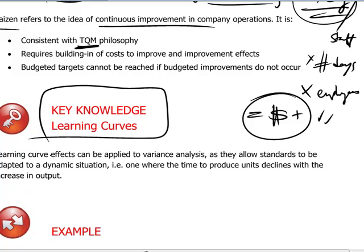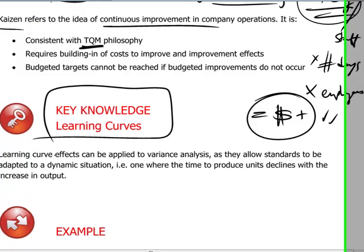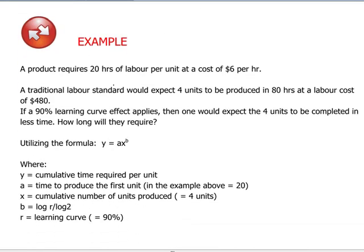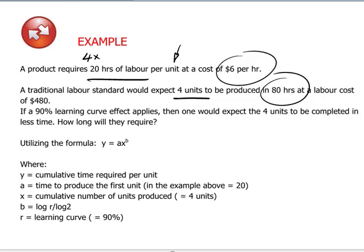There's another technique connected with the beneficial impact of people doing their jobs more efficiently — learning on the job. To quantify this effect, consider an example: a product requires 20 hours of labor per unit at a cost of six dollars per hour. Without a learning curve, if four units are produced it would require 4 times 20, or 80 hours, giving a total labor cost of 480 dollars.